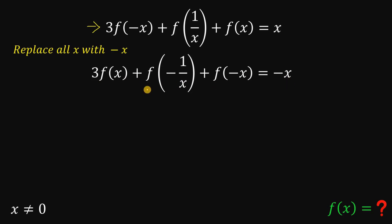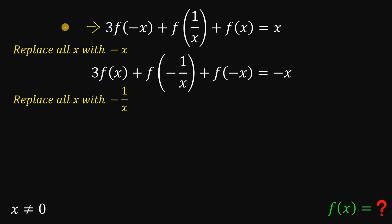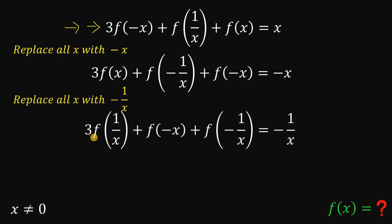Now we introduce another function, f of negative 1 over x. So we replace all x with negative 1 over x in the original functional equation. Doing that gives us: 3 times f of 1 over x, plus f of negative x, plus f of negative 1 over x, equals negative 1 over x.